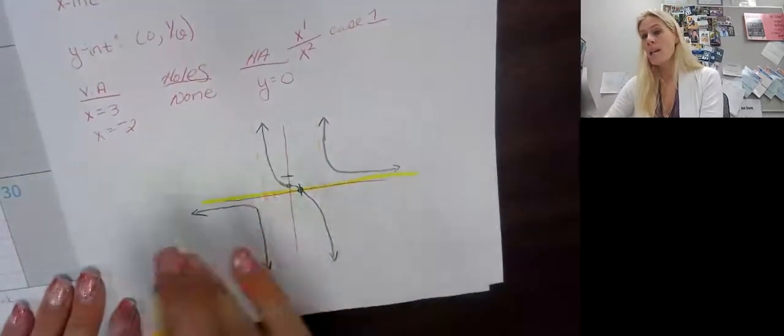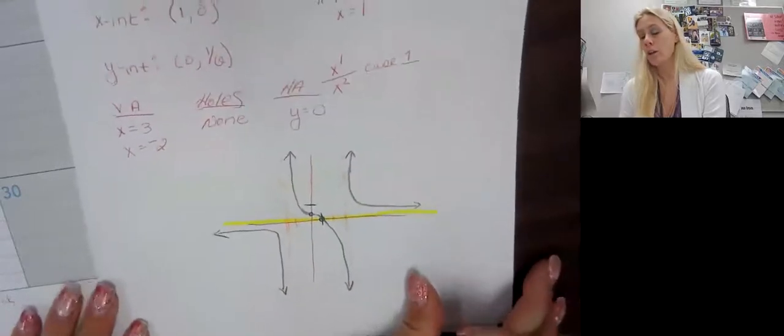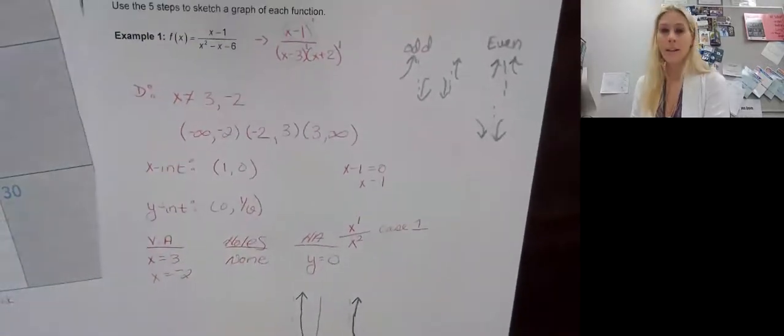And then again, our horizontal asymptotes says that towards the end here, I get really close but I do not touch. If this one's going down, the other side must be going up because it's odd. And again, I hug those asymptotes. In the next video, I'll show you how to use sign rate to help us identify if we're right or not, even though I know we're right.